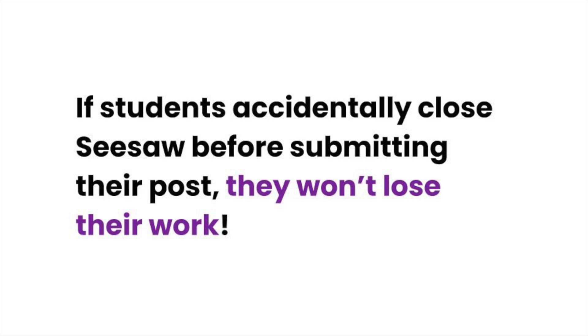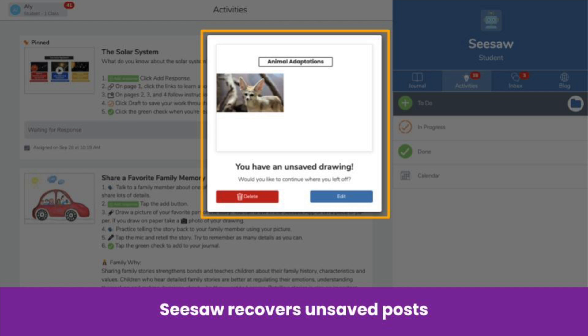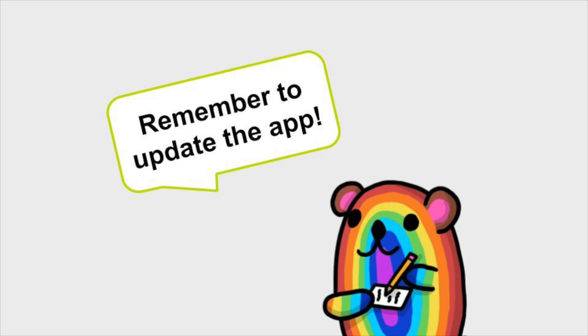We also made improvements to Post Recovery. If Seesaw closes before students submit their post, they won't lose their work — Seesaw saves a copy of the post on the student's device. When the student opens Seesaw again on the same device, they'll be able to continue where they left off. To access these updates, make sure to update your iOS and Android devices.